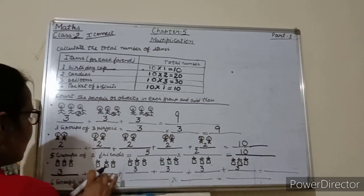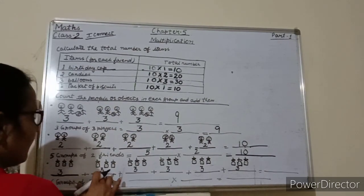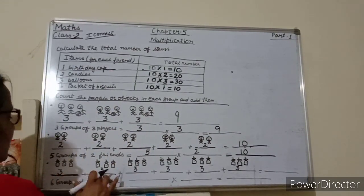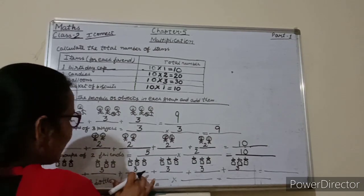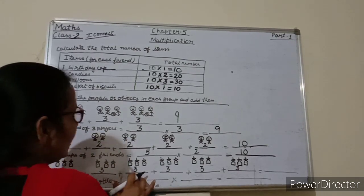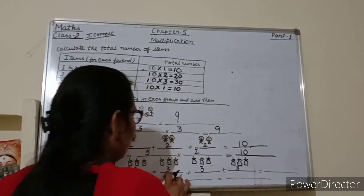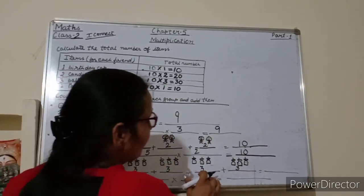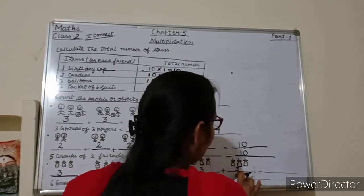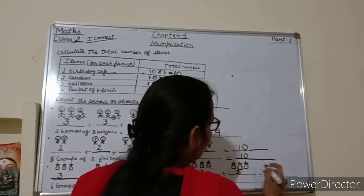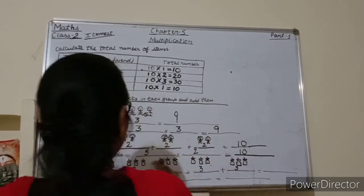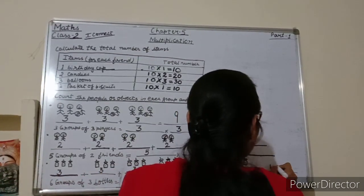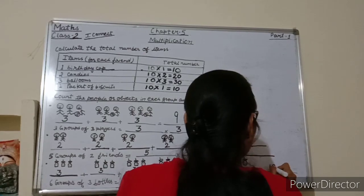3 plus 3 is 6; 6 plus 3 is 9; 9 plus 3 is 12; 12 plus 3 is 15; 15 plus 3 is 18. So total number of bottles is 18. You have to write 18.